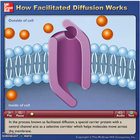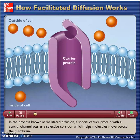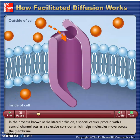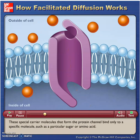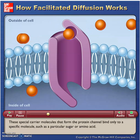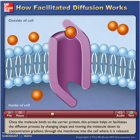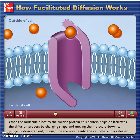In the process known as facilitated diffusion, a special carrier protein with a central channel acts as a selective corridor which helps molecules move across the membrane. These special carrier molecules that form the protein channel bind only to a specific molecule, such as a particular sugar or amino acid. Once the molecule binds to the carrier protein,